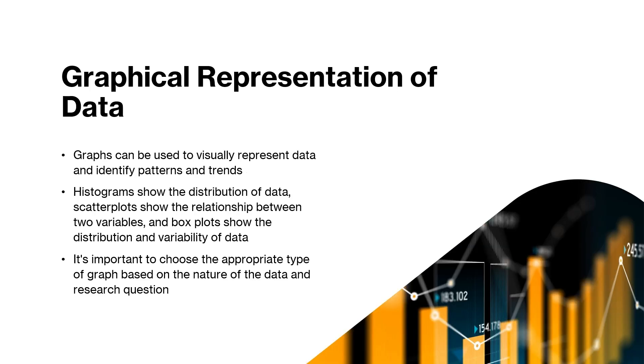Graphs can be used to visually represent data and identify patterns and trends. Histograms show the distribution of data, scatter plots show the relationship between two variables, whereas box plots show the distribution and variability of the data. It's important to choose the appropriate type of graph based on the nature of the data and research question.